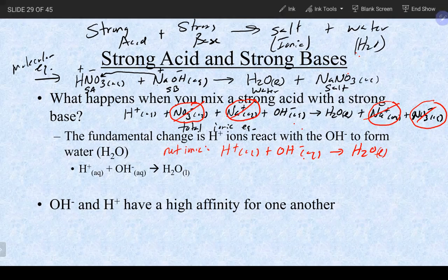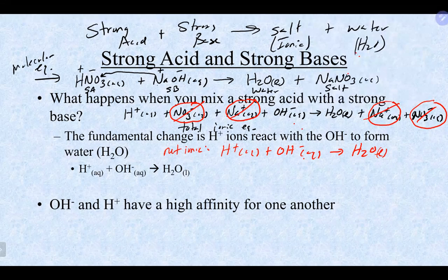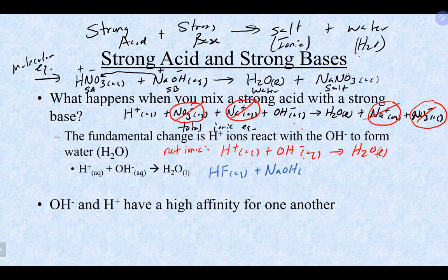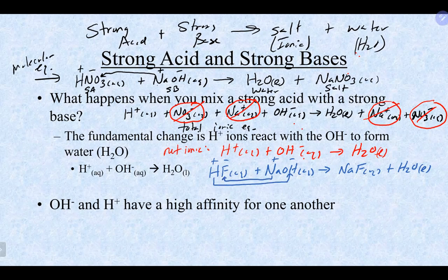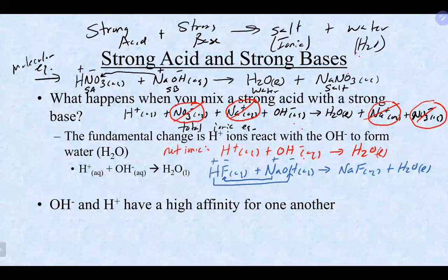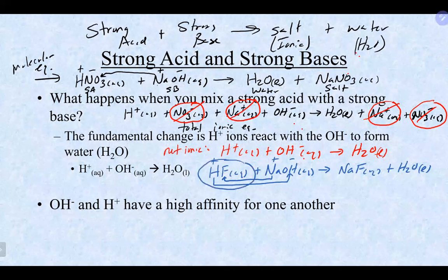If you use a weak acid — for example, HF reacted with sodium hydroxide, a strong base — you get NaF and water. That's still a double displacement. When writing the total ionic equation, because HF is a weak electrolyte, you keep it together and do not break it apart. You still break apart the sodium hydroxide. You break apart the sodium fluoride. Water stays together. The only spectator ion here is sodium.